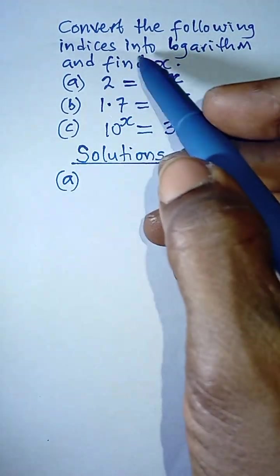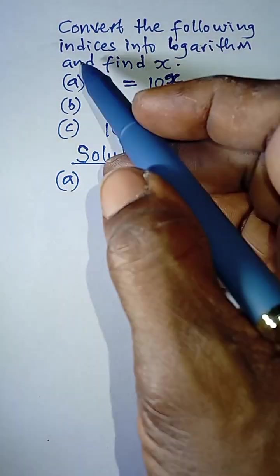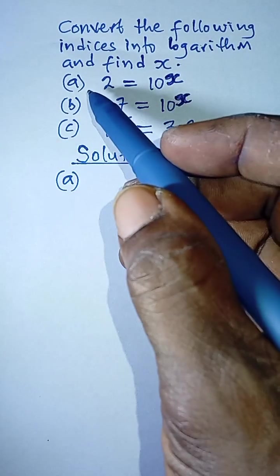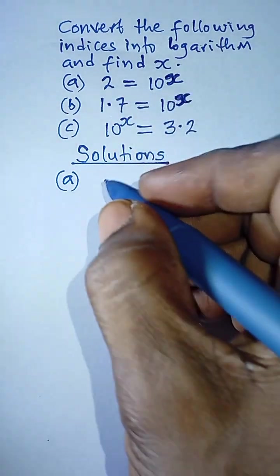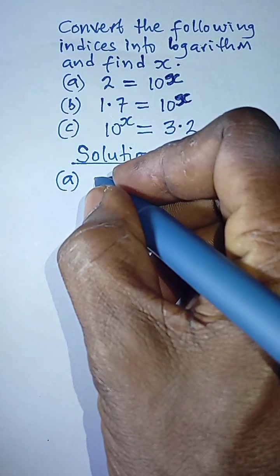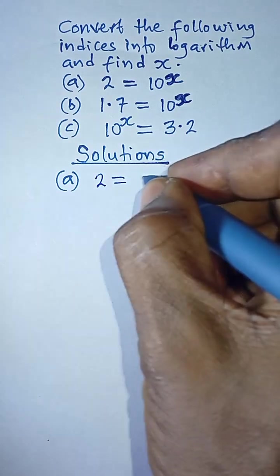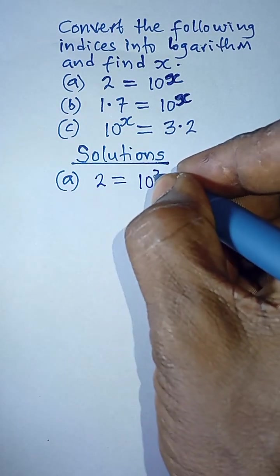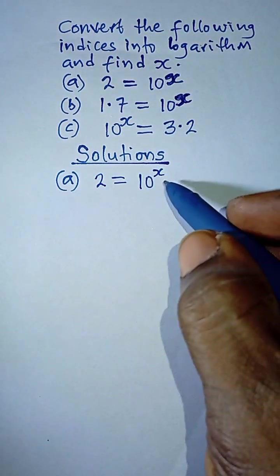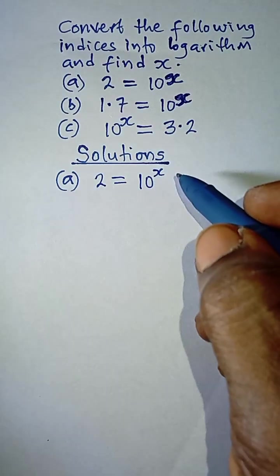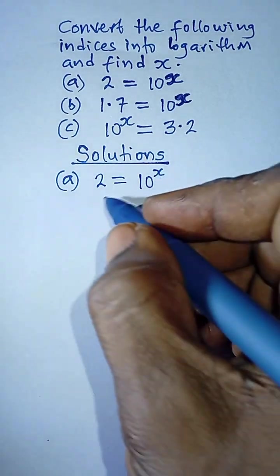Convert the following indices into logarithm and find x. For the first part, 2 equals 10 raised to power x. We know that logarithm simply means power, so this power x, as we are converting it to logarithm now, this power x becomes the logarithm to the base 10.